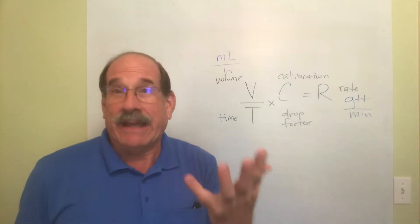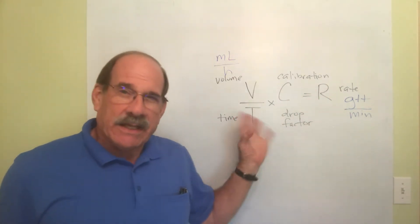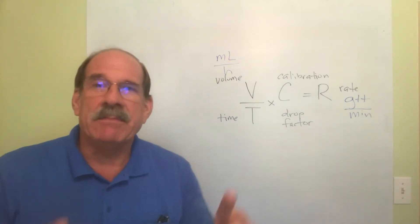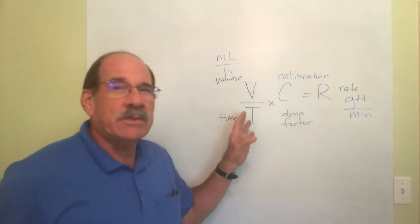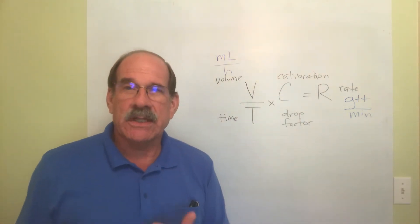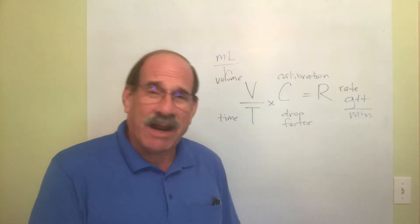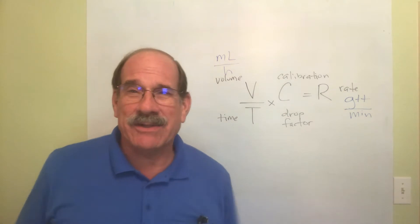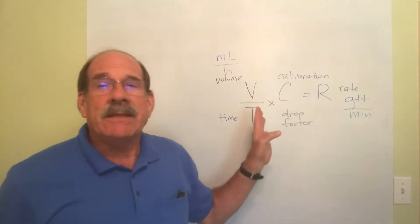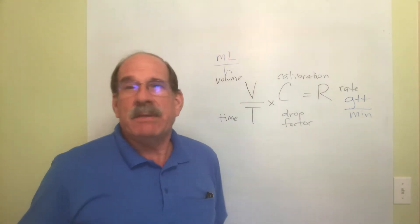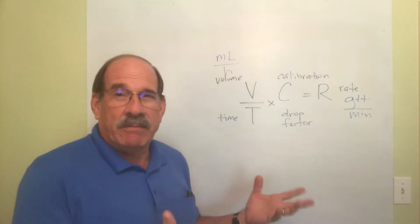There's a lot of ways you can do this. I think this is the best way - a formula: V over T times C equals R. The reason I like this method is number one, it's real simple. This was invented and has been used ever since before calculators existed. This has been done for decades by nurses with a piece of paper and a pencil and their brain. Simple math.